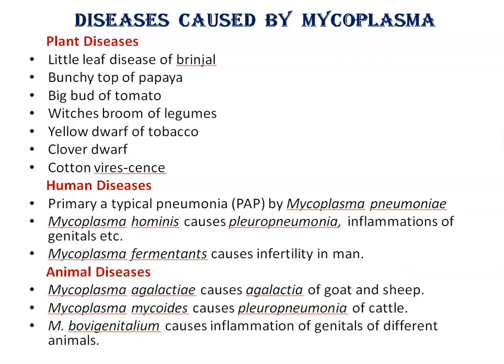Mycoplasmas cause diseases in plants, humans, and animals. Important plant diseases caused by mycoplasma include little leaf disease of orange, bunchy top of papaya, witch's broom of legume, and yellow dwarf of tobacco. In humans, primary atypical pneumonia is caused by Mycoplasma pneumoniae, and Mycoplasma hominis causes pleuropneumonia or inflammation of the genitals. In animals, Mycoplasma agalactiae causes agalactia in goats and sheep, and Mycoplasma mycoides causes pleuropneumonia in cattle. This concludes our overview of mycoplasma.